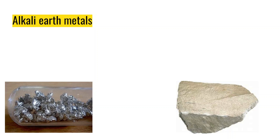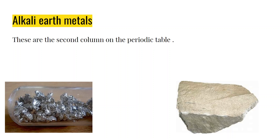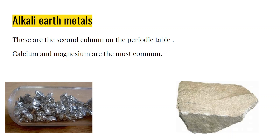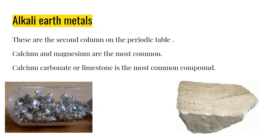Our next family is the alkaline earth metals, and they are the second column of the periodic table. The most common ones are calcium and magnesium — both things added to your food to help your body work better. Calcium is used for strong bones, and magnesium is used for bones and other things as well. Calcium carbonate, or limestone, is the most common compound in the alkaline earth metals.